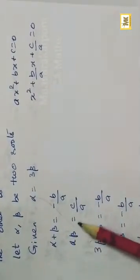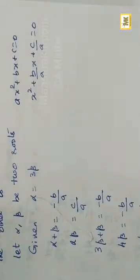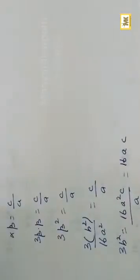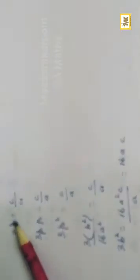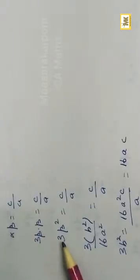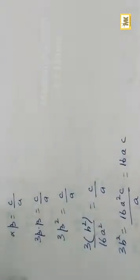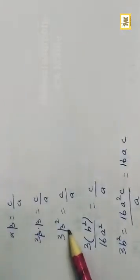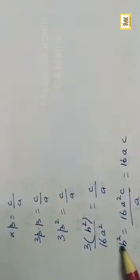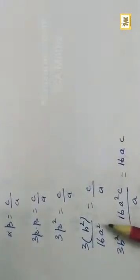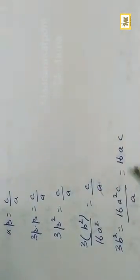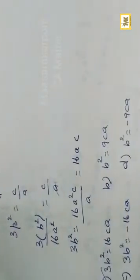Product of roots: alpha·beta = c/a. Substituting alpha = 3·beta: 3·beta² = c/a. With beta = -b/(4a), we get 3b²/(16a²) = c/a, so 3b² = 16ac. Option A.